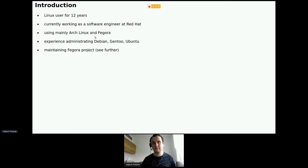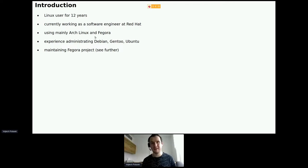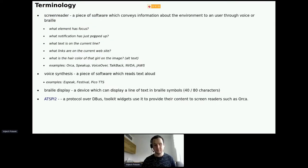The goal of this talk is to briefly introduce the situation for blind users who want to use the Linux desktop — what the problems are, but also what things are working quite well right now. Then we'll move to Figura, which is a project trying to improve this. At the end, I'd like to sum up what you can do about it as developers, QAs, users, and documentation contributors.